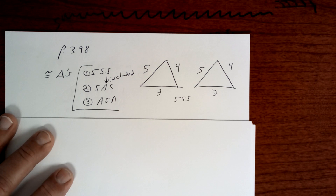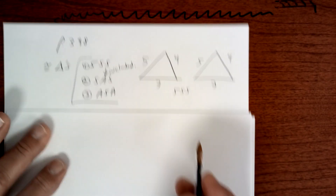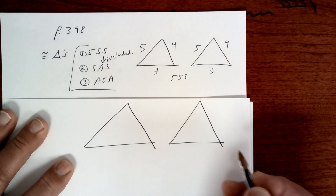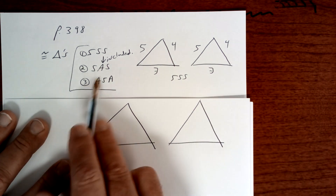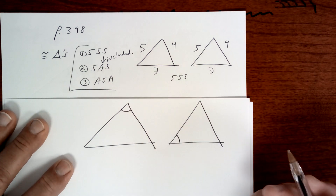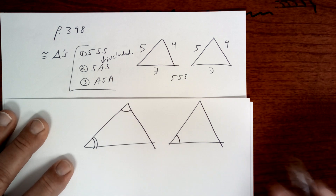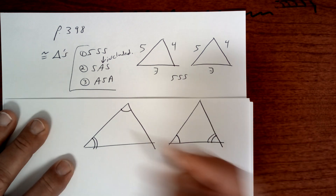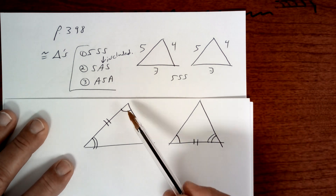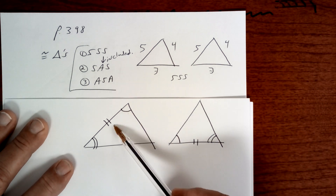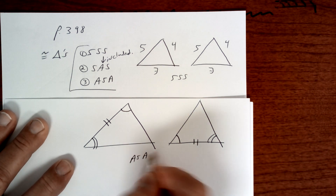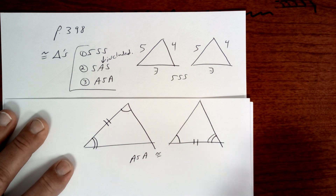How would angle, side, angle look? Draw these two triangles and I'll show you. We need an angle equal to this angle, then you need this angle equal to this angle, and then you need this side equal to that side. That would be angle, side, angle. These would be congruent by the angle, side, angle theorem.